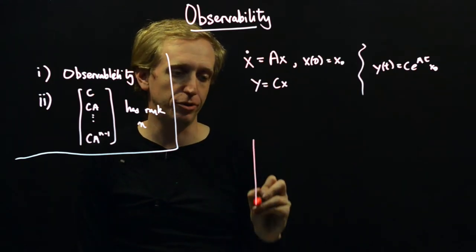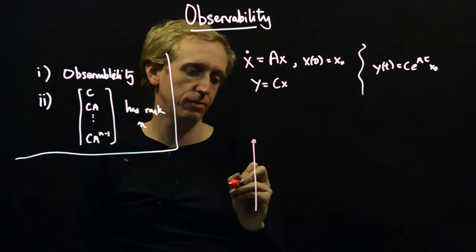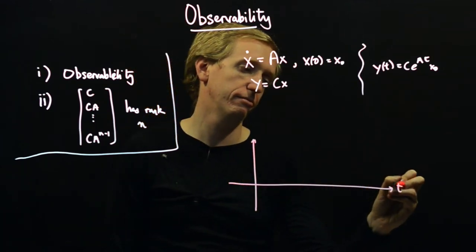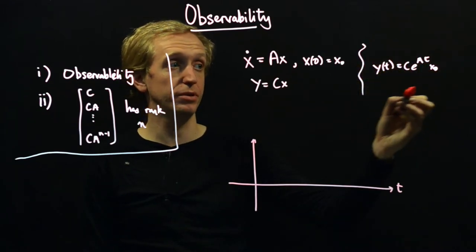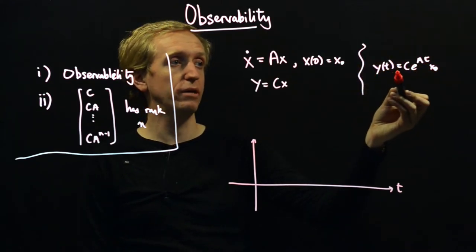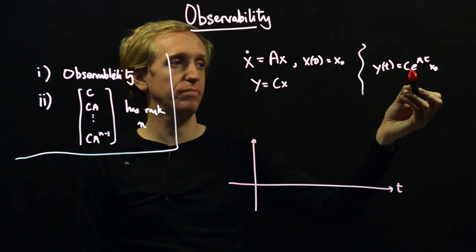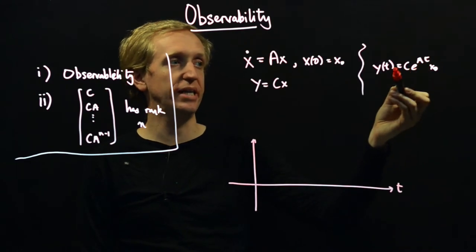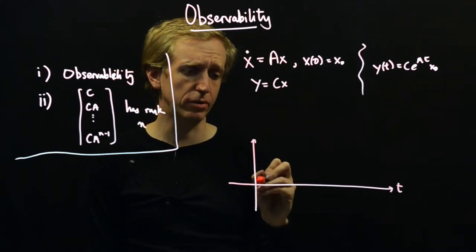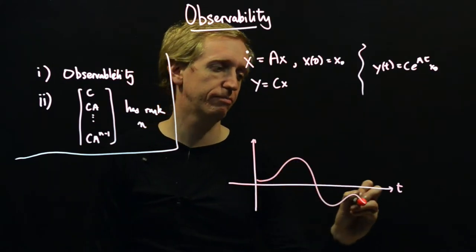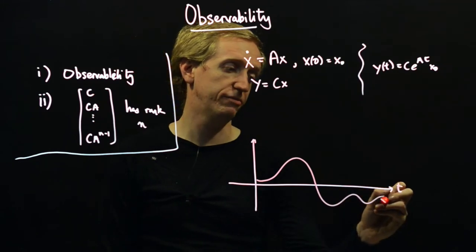So the picture we should have in our mind is we have the output trajectory y. In the absence of inputs this is what it looks like. So y of t is just given by c and then the matrix exponential of a t times the initial condition x0. And maybe it looks like this, so maybe this is y of t.